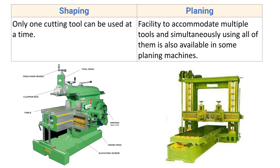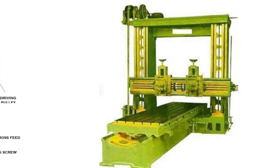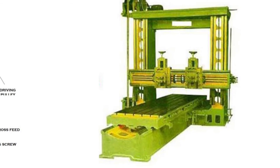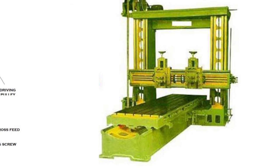In the planer, the facility to accommodate multiple tools and use them simultaneously is available in some planing machines. Some planer machines have a tool post where two or three cutting tools can be fixed, which ultimately increases the productivity of the machine. The workpiece is fixed on the table, which reciprocates, and the feed motion is given by the cutting tools. Two different cutting tools can be used simultaneously for removing material from the surface of the workpiece.